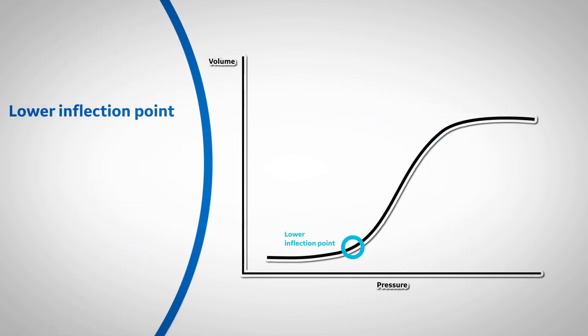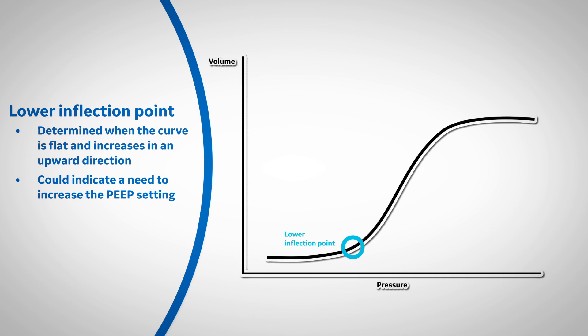The lower inflection point is determined when the curve is flat and increases in an upward direction. This could indicate a need to increase the PEEP setting. Any pressure below the lower inflection point can lead to atelectasis.